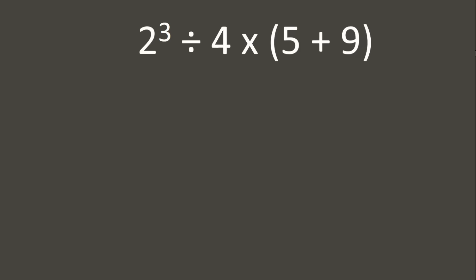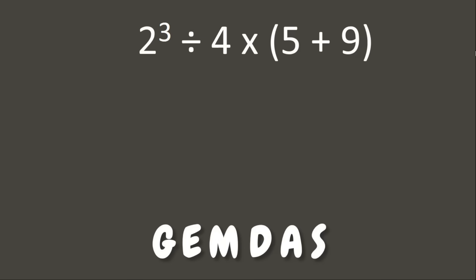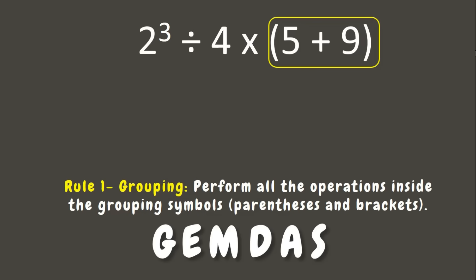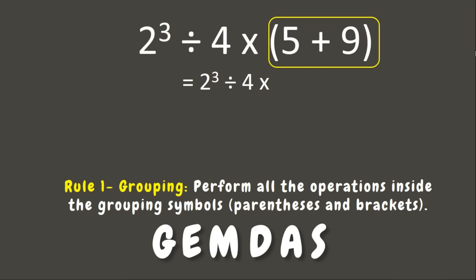We have here 2 to the third power, divided by 4, times 5 plus 9. Let us solve this using the GEMDAS rule. First, we need to look for grouping symbols. We have 5 plus 9 inside parentheses. Let us solve: 5 plus 9 is 14.